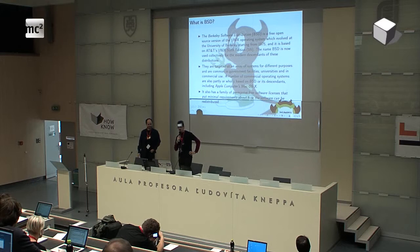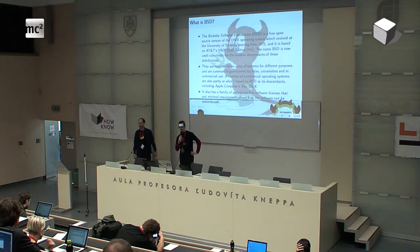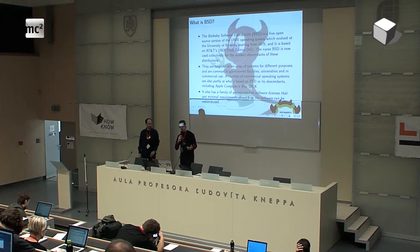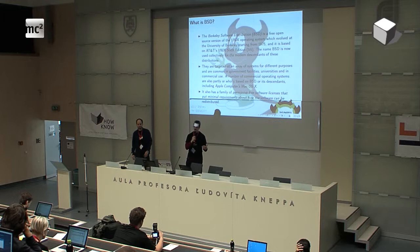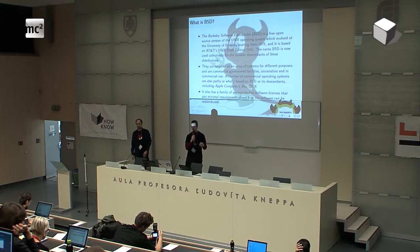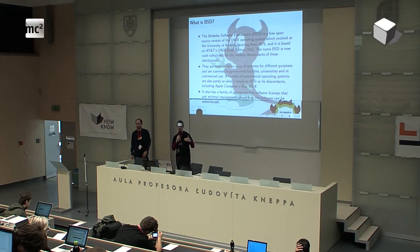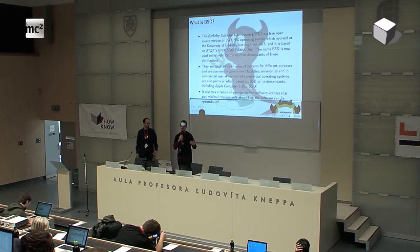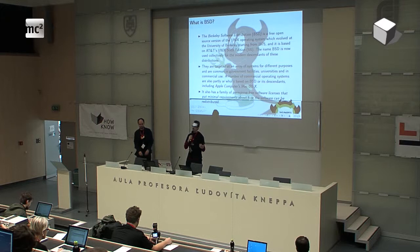BSD is technically the Berkeley Software Distribution that comes from America. This is a version of the Unix operating system developed at the University of California, Berkeley. It's a special version of Unix that became open source from the very beginning, and it has a special license with a very permissive license that requires only a minimum of things. Open source means you have the source code, so you can modify it, recompile it, and redistribute it as you want.